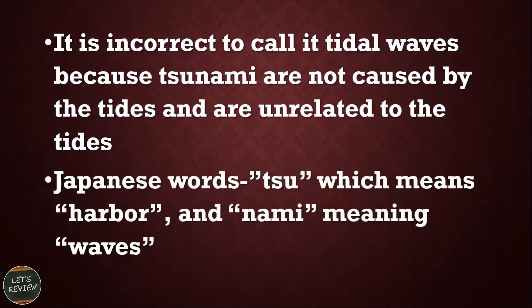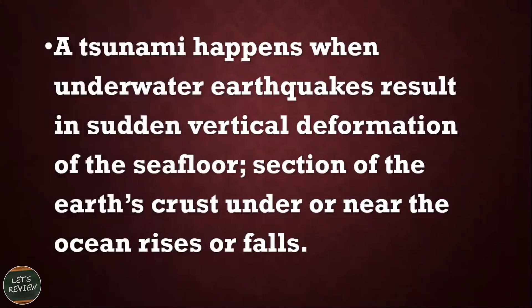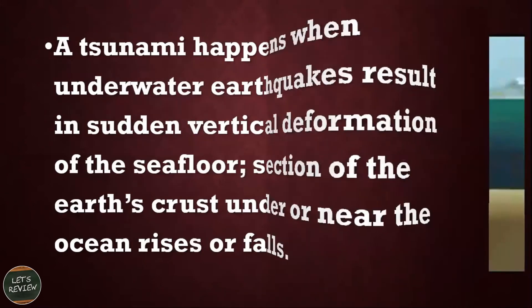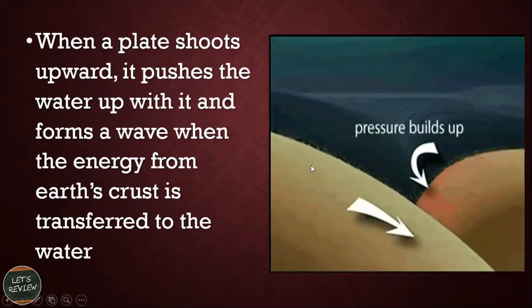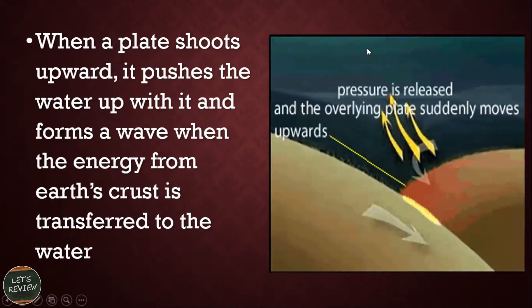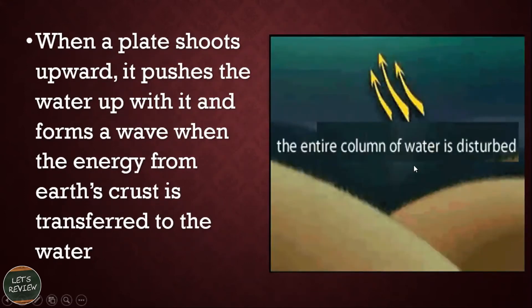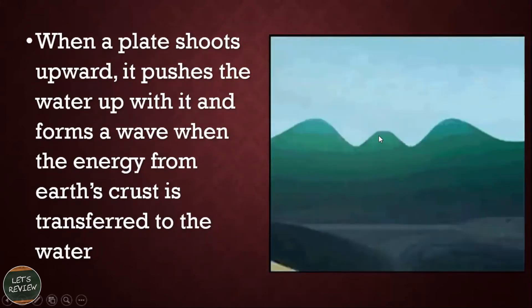The word tsunami originated from the Japanese words 'tsu,' meaning harbor, and 'nami,' meaning waves. A tsunami happens when an underwater earthquake results in sudden vertical deformation of the seafloor — a section of the earth's crust under or near the ocean rises or falls. When the plate shoots upward, it pushes the water up and forms a wave as energy from the earth's crust is transferred to the water, disturbing the entire column of water and creating the wave.